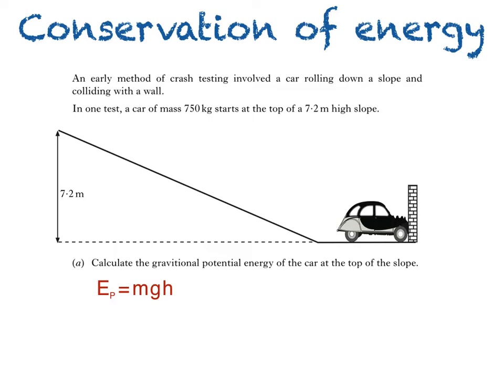Now, back in the days of Intermediate II physics, the value for g, that's gravitational field strength on Earth given in the datasheets, was 10 newtons per kilogram. Now, for National 5 physics, the value is 9.8 newtons per kilogram. So, substituting this, as well as the mass of the car and its initial height into the equation, we get 750 times 9.8 times 7.2, which works out to be 52,920 joules.